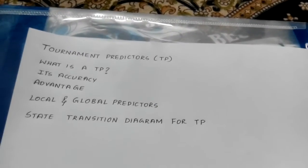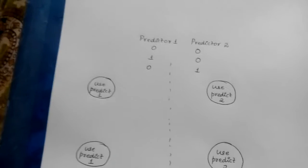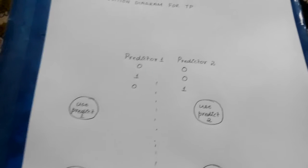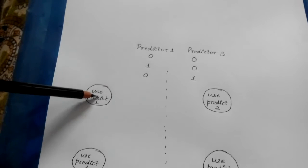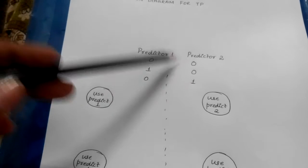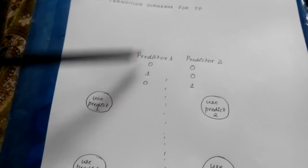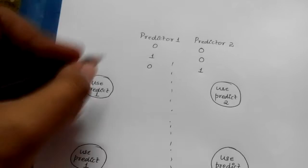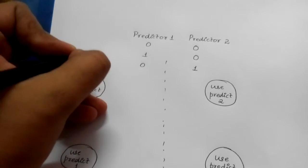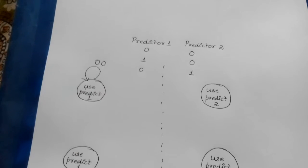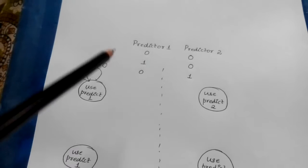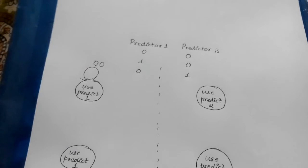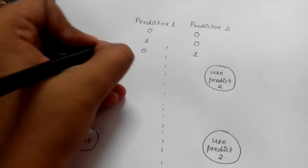Now let's see the state diagram for tournament predictor. Here I have taken two predictors: predictor 1 and predictor 2. Any number of predictors can be used, but for simplicity two predictors are used. In the state 'use predictor 1': when both predictor 1 and predictor 2 values are 0,0 — meaning both are wrong — the predictor will remain in the same state. When predictor bit 1 is correct (1) and predictor 2 is wrong (0), the state will also remain the same.